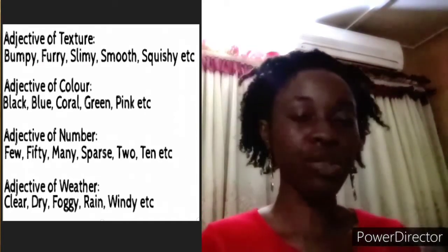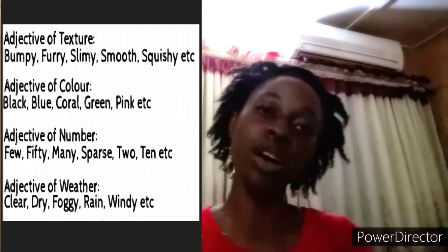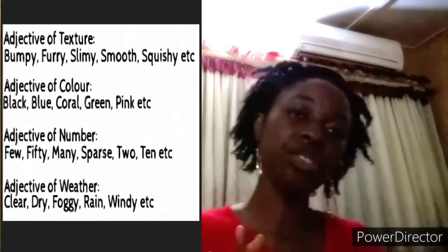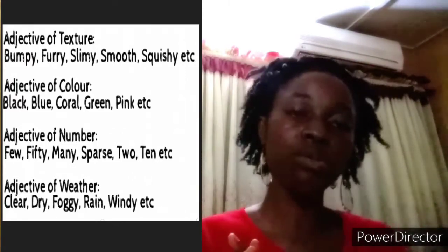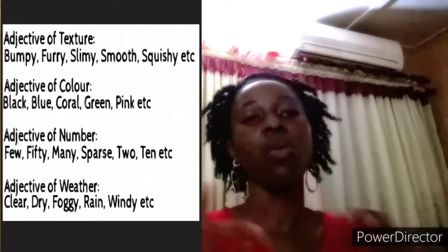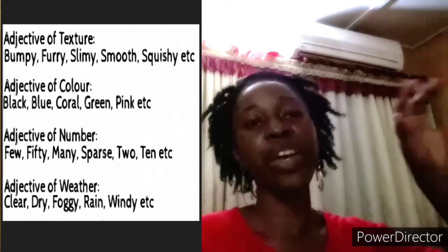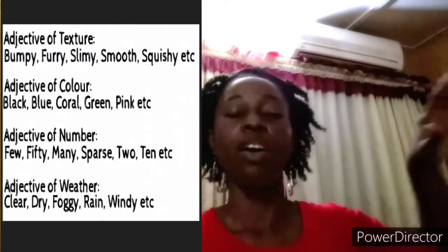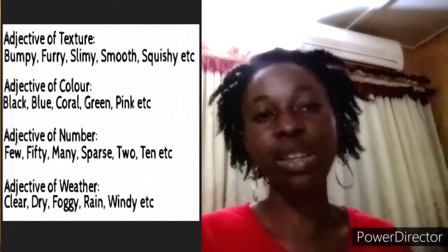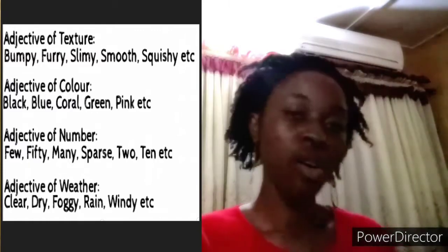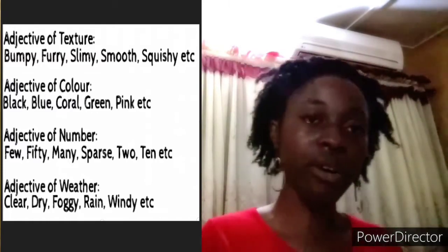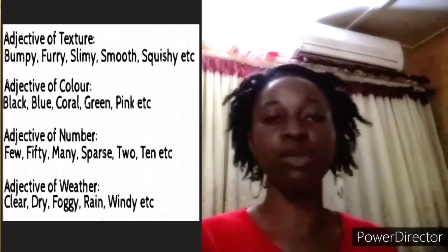We also have adjectives of color — we have blue, red, purple, pink, orange, and so on and so forth. We have adjectives of number — the ones that tell number — like few, many, two, ten, plenty, sparse, and so on and so forth.